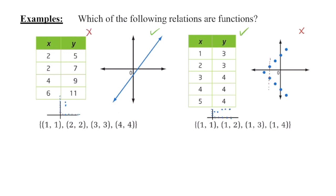Looking at the sketches: in the second table when x is 2 we don't pass the vertical line test because there are two different y values. In the first table, x is 1 with y equal to 3, then x is 2 with y equal to 3 — that's okay. We have a horizontal line situation, which is fine; there's no vertical line issue to indicate it is not a function.